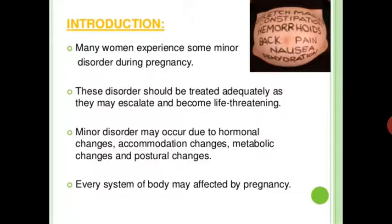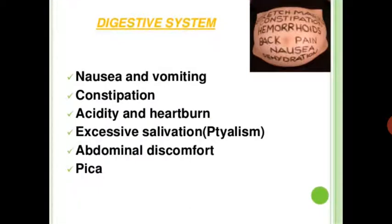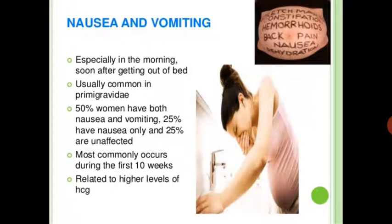Every system and body may be affected by pregnancy. First is the digestive system: nausea, vomiting, constipation, acidity and heartburn, excessive salivation, abdominal discomfort, and pica. Nausea and vomiting occur especially in the morning, soon after getting out of bed. It is usually common in primigravida. 50% of women have both nausea and vomiting, 25% have nausea only, and 25% are unaffected.